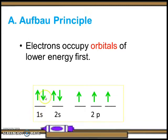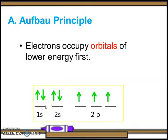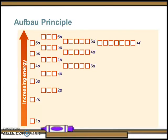An orbital diagram uses arrows to represent electrons. When there are two electrons in an orbital, they are called an electron pair, shown with arrows pointing in opposite directions according to the Pauli exclusion principle. An arrow pointing up denotes an electron spinning one way; an arrow pointing down denotes the other spin. If an orbital has only one electron, it is called an unpaired electron. Orbitals of greater energy are higher on the diagram, and the range of energy levels within a principal energy level can overlap with those of another principal level.